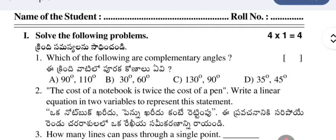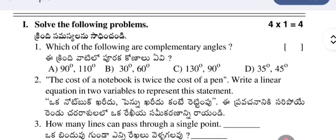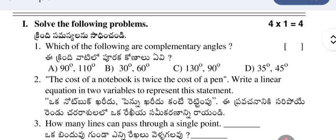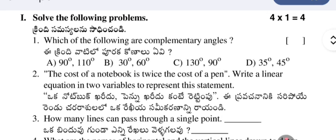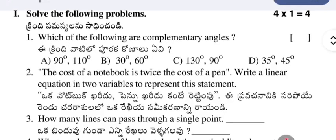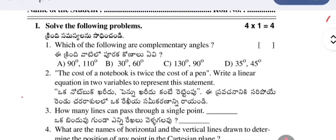The first question is: solve the following problems. This is Section 1, where four problems are given, each carrying one mark. Which of the following are complementary angles? Complementary angles are angles whose sum is 90 degrees. Of the given four options, B is correct, so the answer is B.